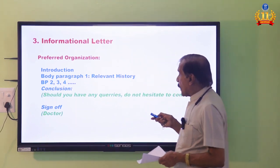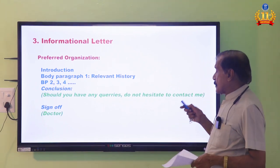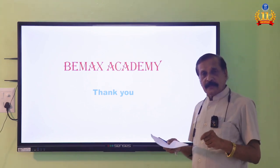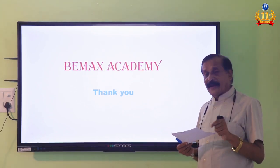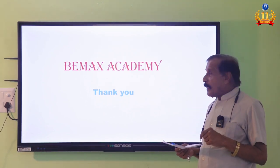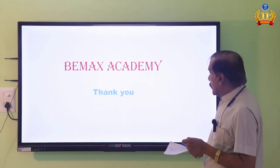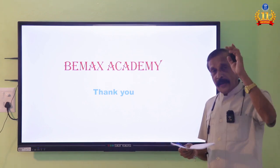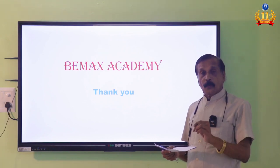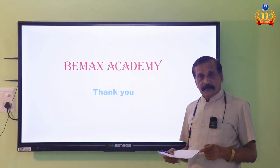So those are the four types of letters: referral, discharge, transfer, and information. What I wanted to explain here is only the preferred organization for each type, which is going to create a lot of confusion for students. We have already seen an introduction and the types of letters. The most important thing — which I called the monolithic structure — is how it can be observed through signal words. That will be covered in the next video.